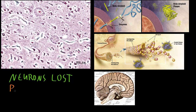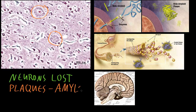The second abnormality is plaques — also called amyloid plaques because they're made up primarily of a protein called beta-amyloid. These amyloid plaques occur in the spaces between cells, so they're outside of the neurons of the brain, and they're abnormal clumps of this beta-amyloid protein.